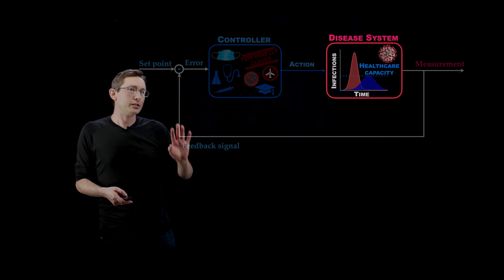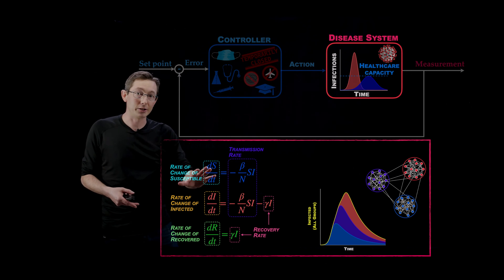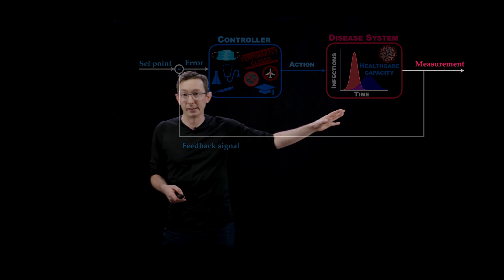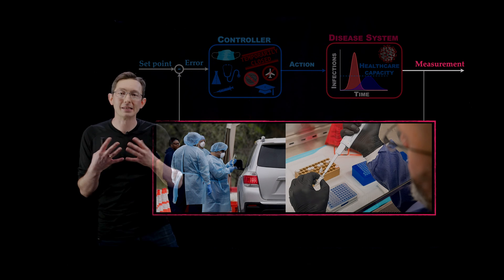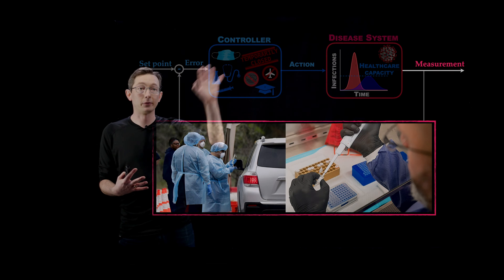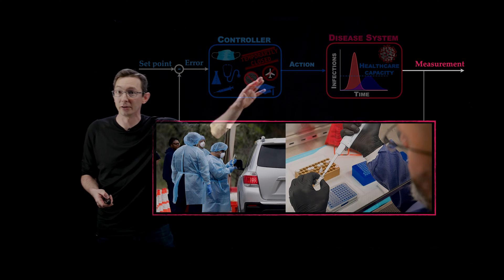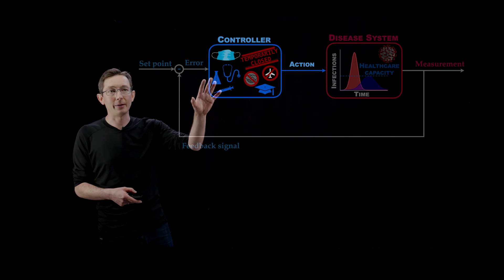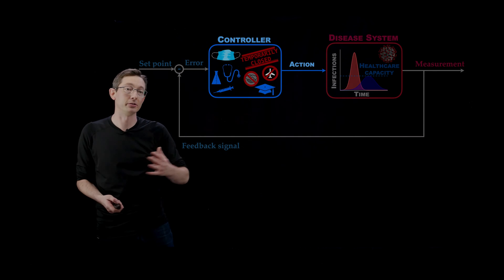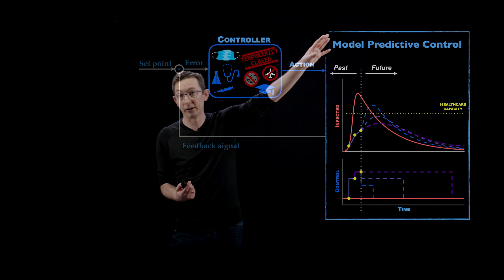We've zoomed into the disease system and talked about various strategies for building models. We have zoomed into the measurement system and talked about the importance of extensive surveillance and measurements of our system, both for better control decisions and to update our models as things change. And we've also talked about various control strategies once we have those measurements and models, for example using model predictive control.